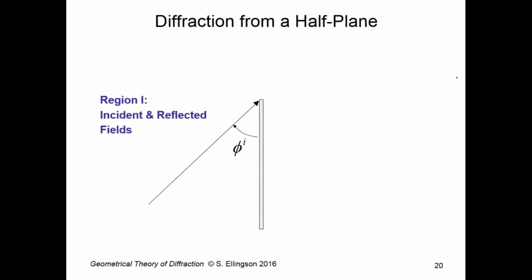So let's start constructing a solution. First, we have to realize there's multiple regions of interest, and each region has to be computed a little bit differently. Over here, I'll call region 1. In region 1, we have an incident field, this incident plane wave, and we also have reflected field from this surface here. So the incident plane wave is coming in like this. The reflected plane wave is going off in this direction.